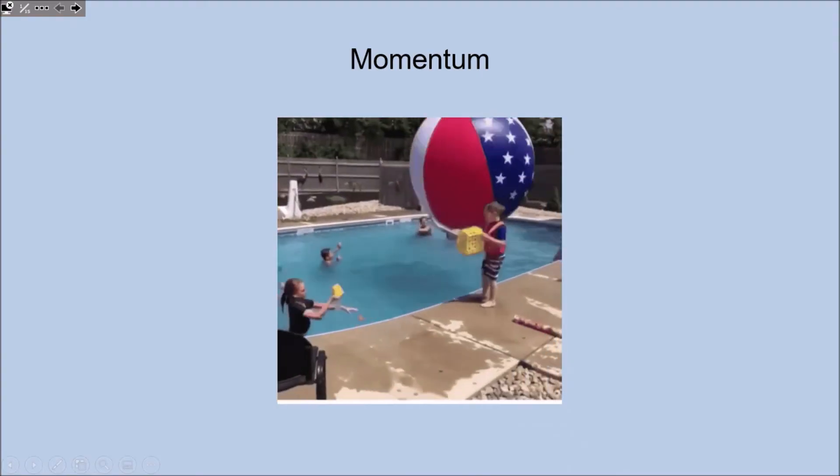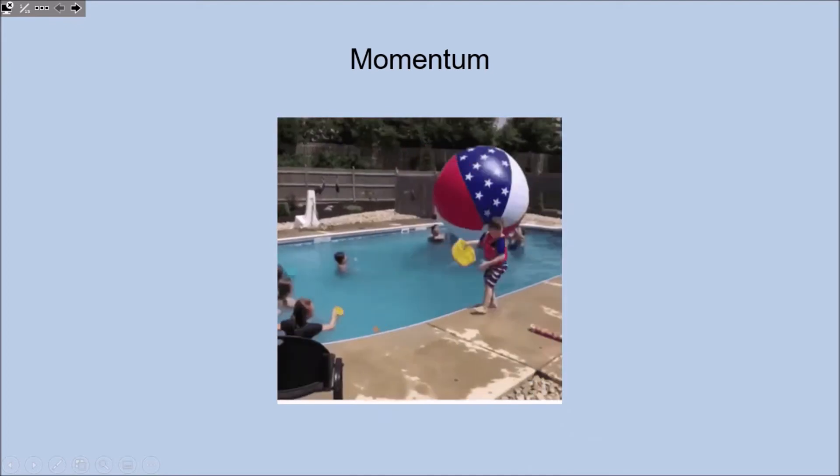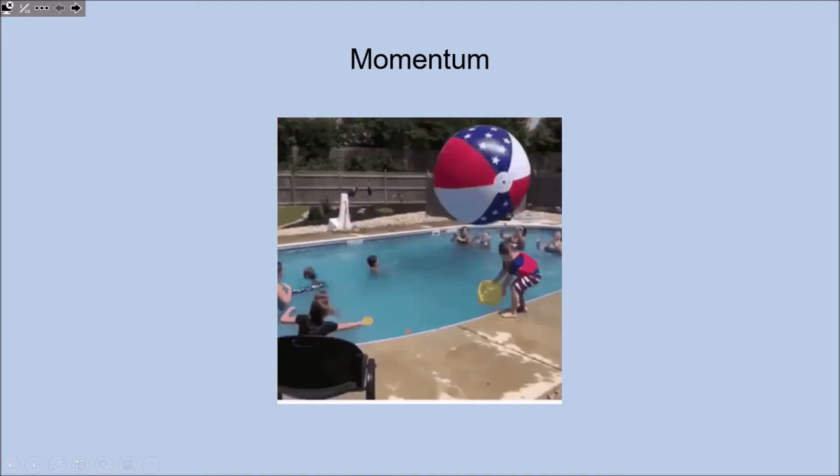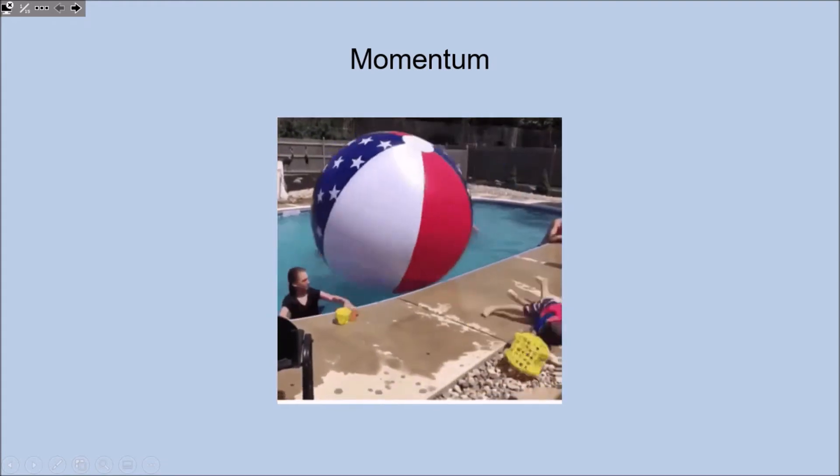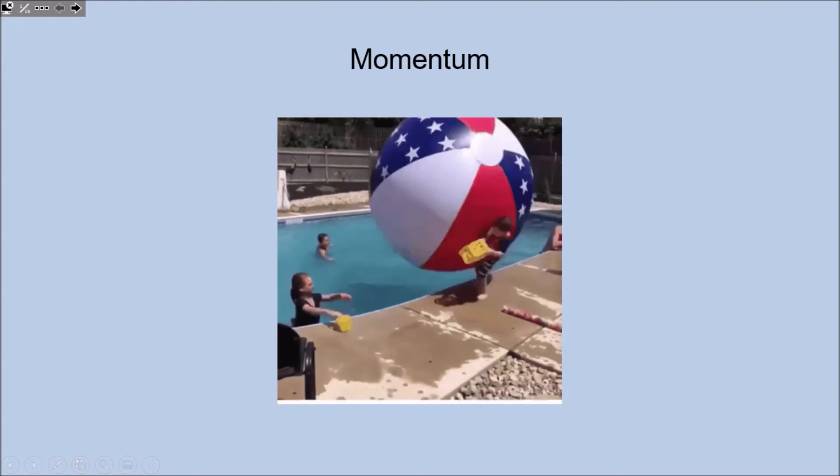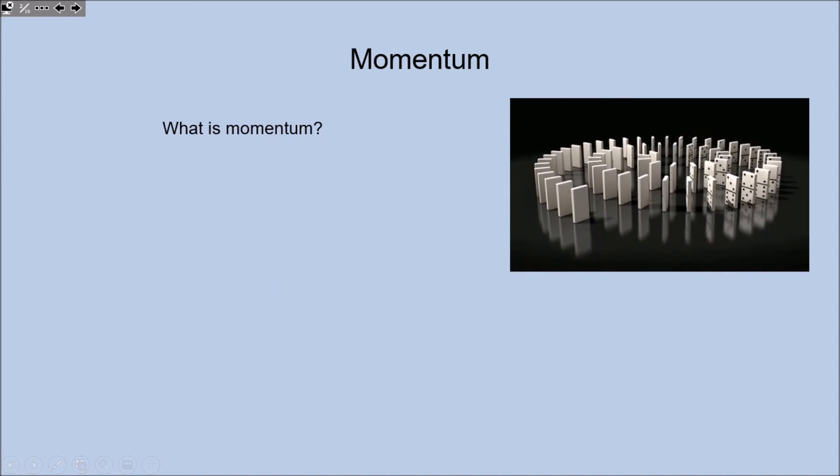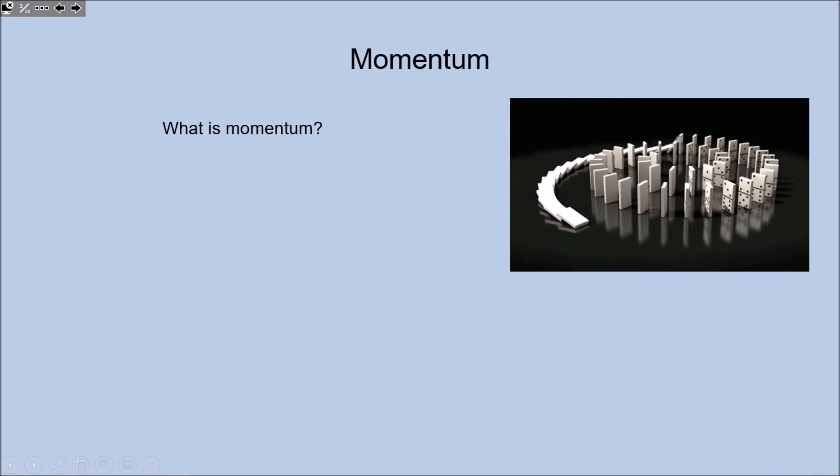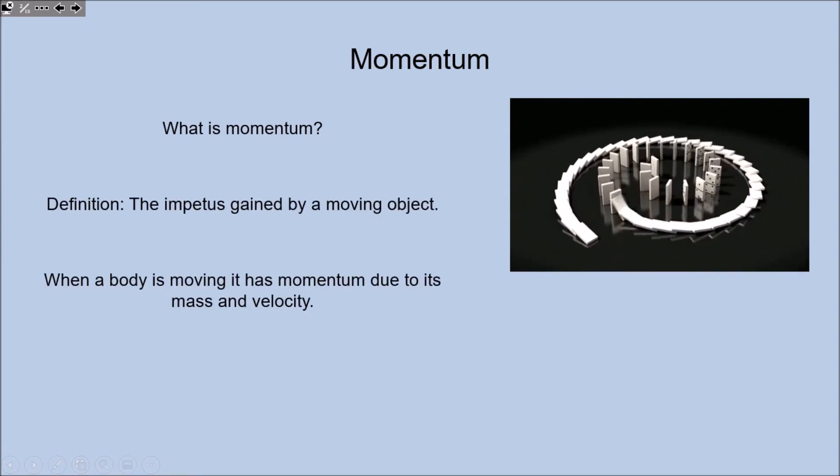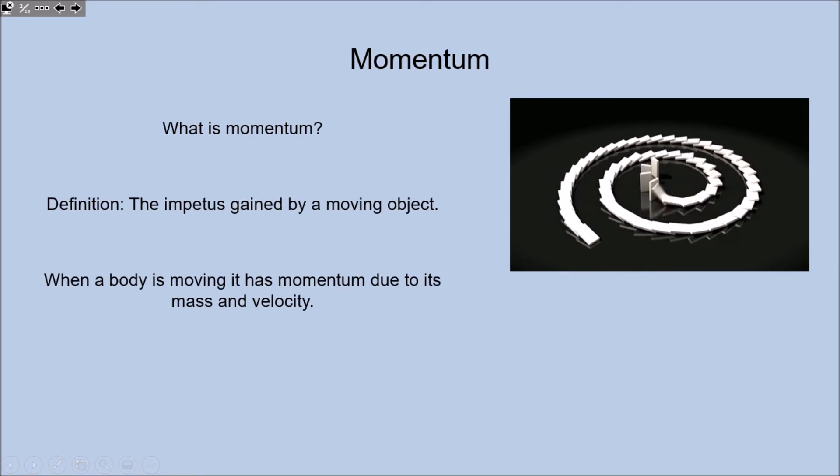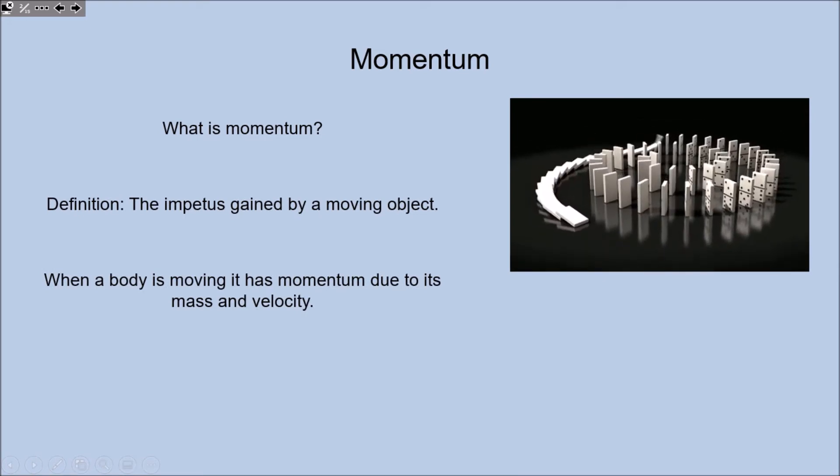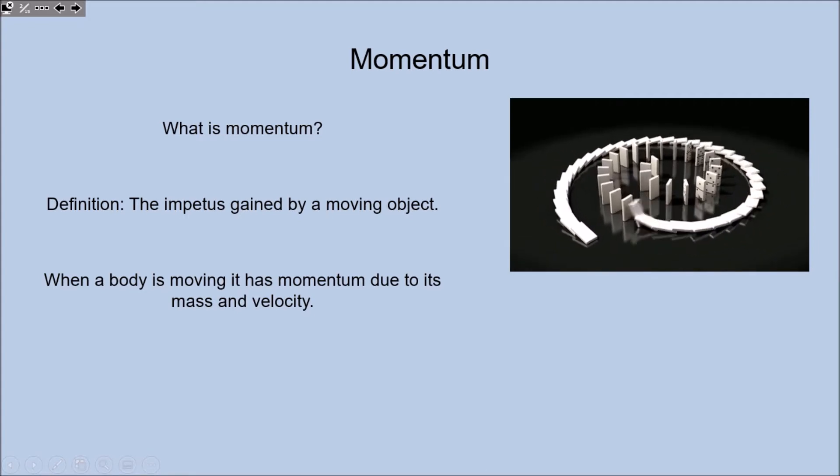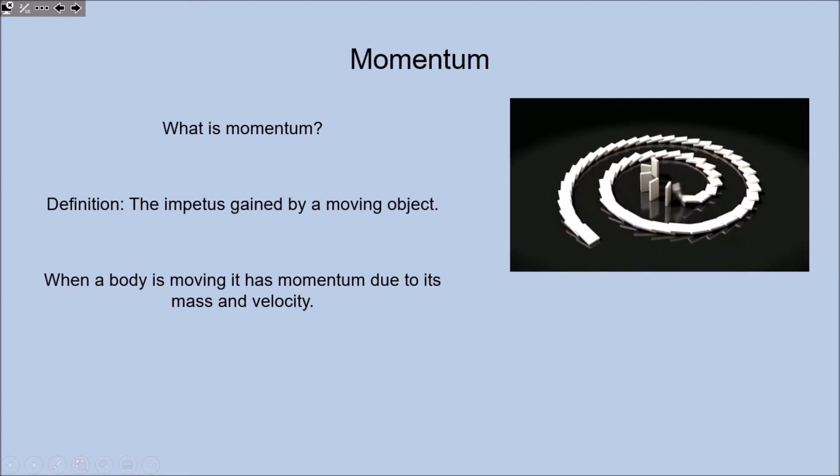We're going to have a look at something called momentum, and you can see some momentum in action there. This is something you probably use quite a lot but never necessarily in an engineering context. Let's have a think about what momentum is. The dictionary definition of momentum is the impetus gained by a moving object. When we have a body or object moving, it's got momentum if it's got a velocity.